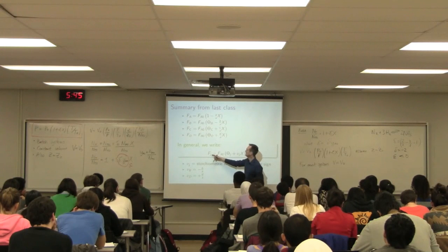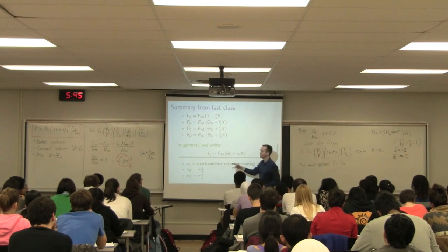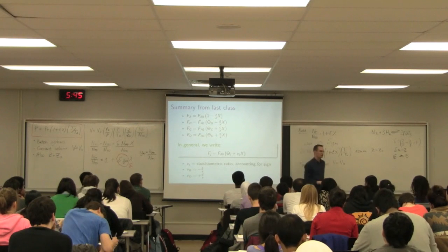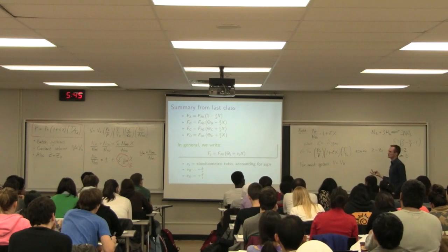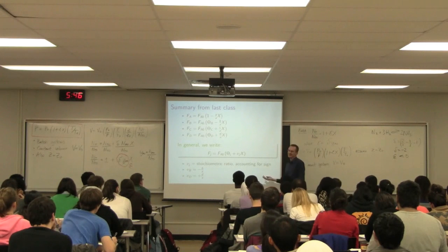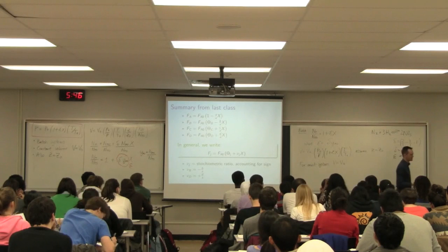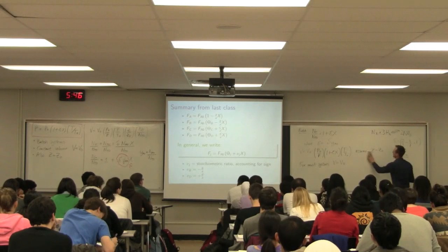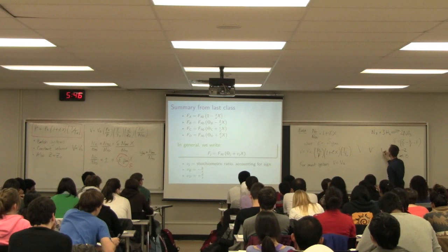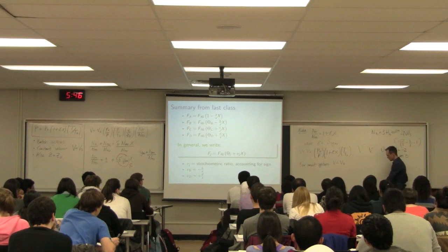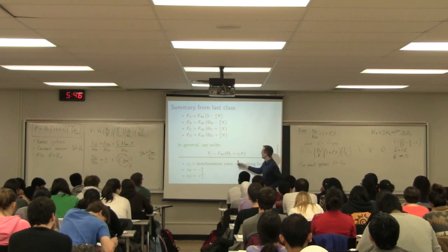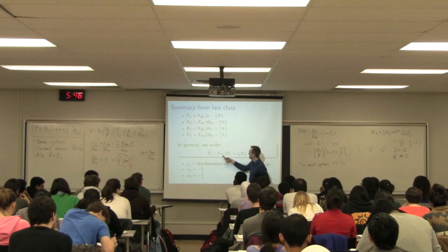Unfortunately, Fogler introduces a third 'v' that looks extremely similar to the others — this time it's the Greek nu (ν), which we call mu. So we now have three v's: capital V for volume, lowercase v for volumetric flow, and Greek ν for the stoichiometric ratio. F_J leaving equals Fₐ₀ times (θ_J + ν_J × X). The term θ_J for species A is clearly equal to one, since A is our basis.